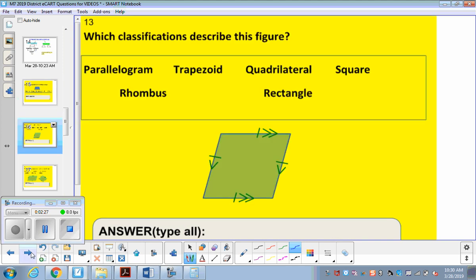Moving on to question 13. Which classifications describe this figure? So first and foremost, it's a polygon. I don't see polygon in here. It's a polygon with four sides, so it is a quadrilateral. It has opposite sides parallel, so it's a parallelogram. And because we can see that it has the one tick mark for all four sides, all four sides are the same, so this one's also a rhombus.